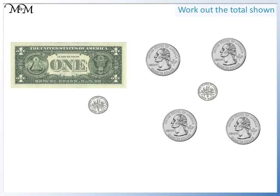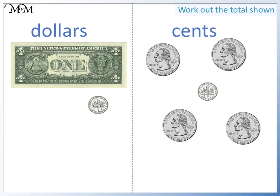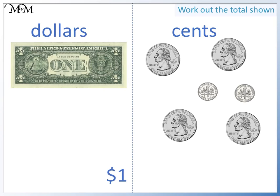In some cases, we may have enough cents to make another dollar. Again, we are asked to work out the total amount of money. We will begin by separating the money into dollars and cents. Looking at the dollars, we have one dollar. Looking at the cents, we have four quarters. Each quarter is worth twenty-five cents. This makes a total of one hundred cents, which is the same as one dollar.